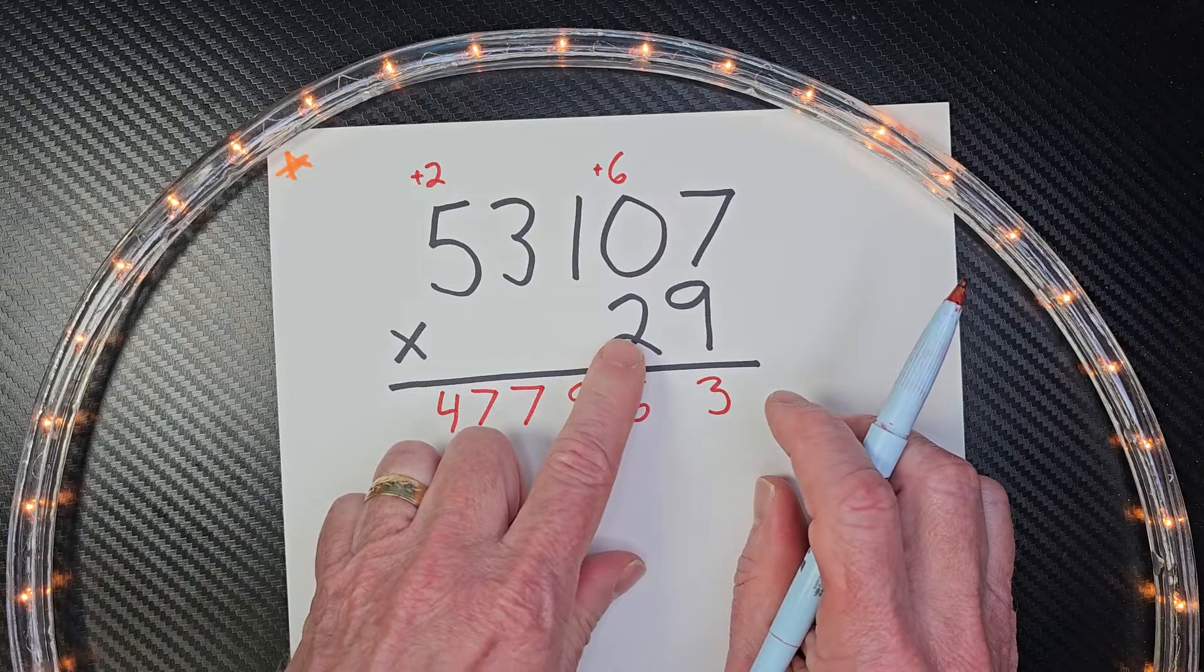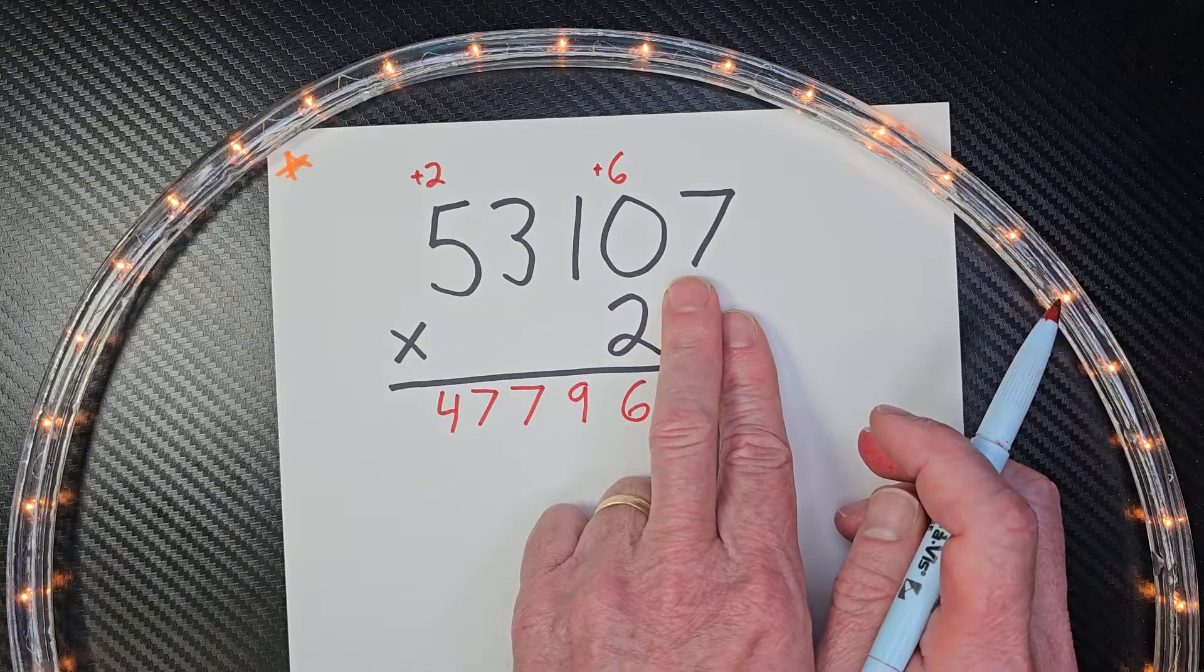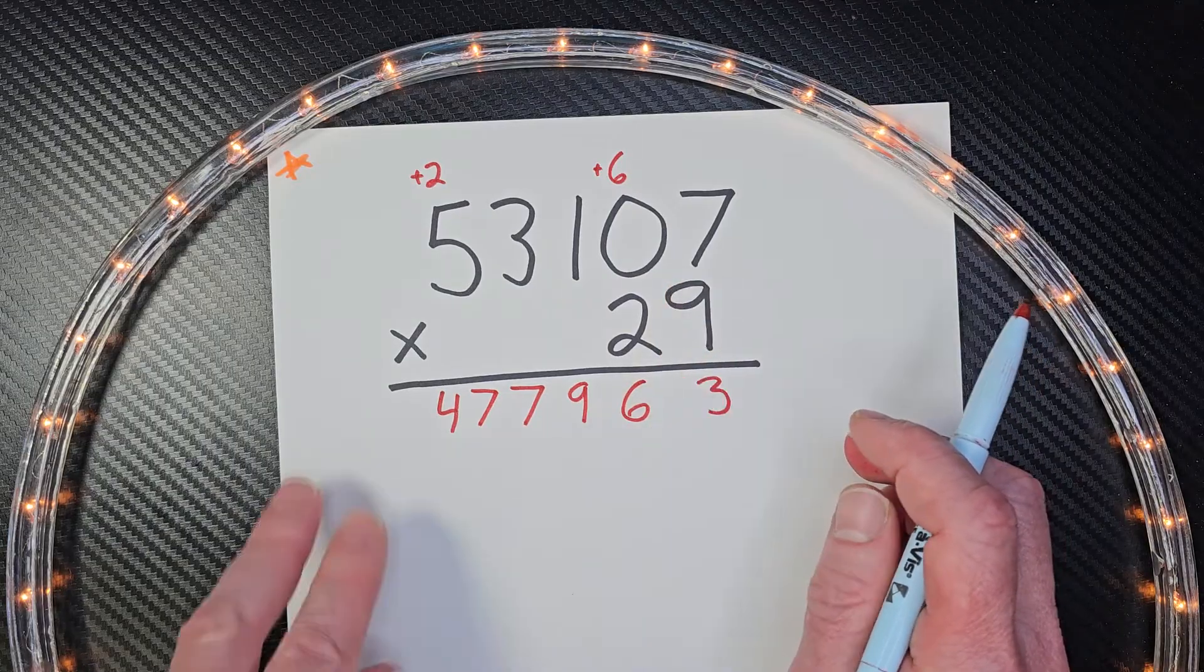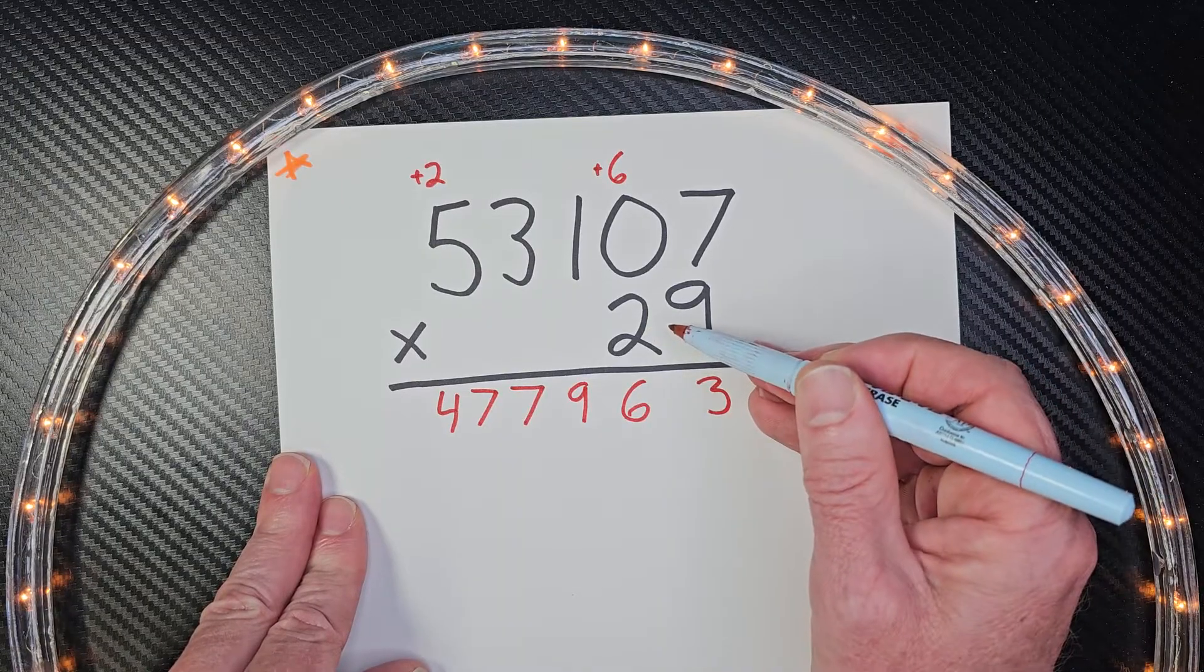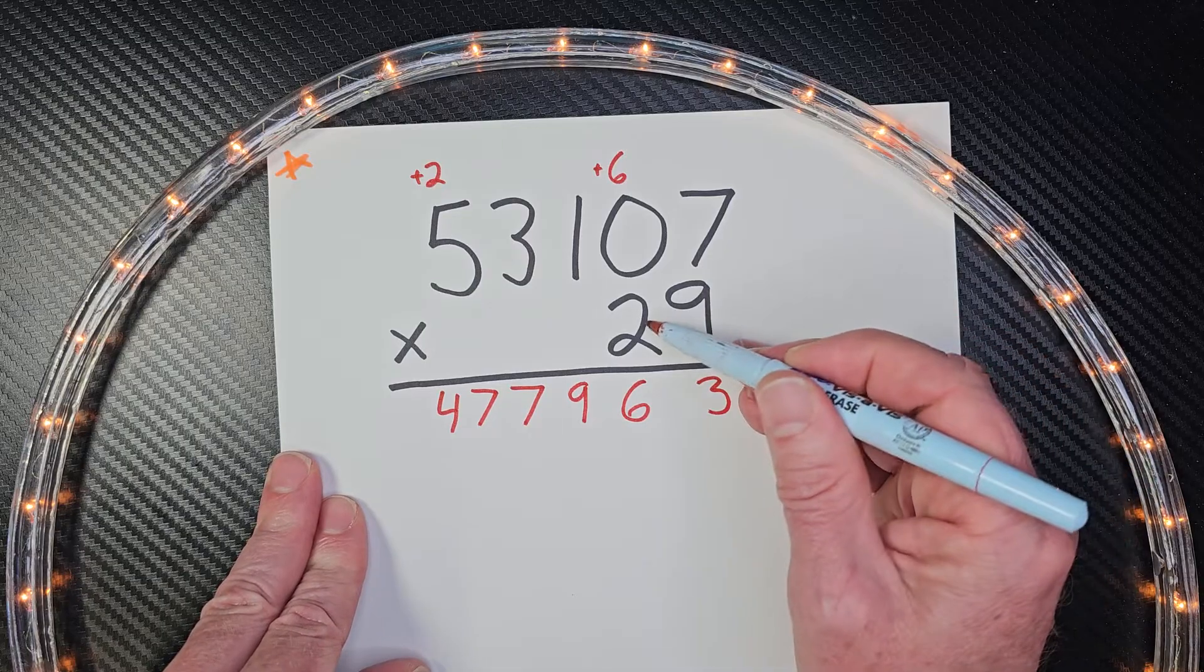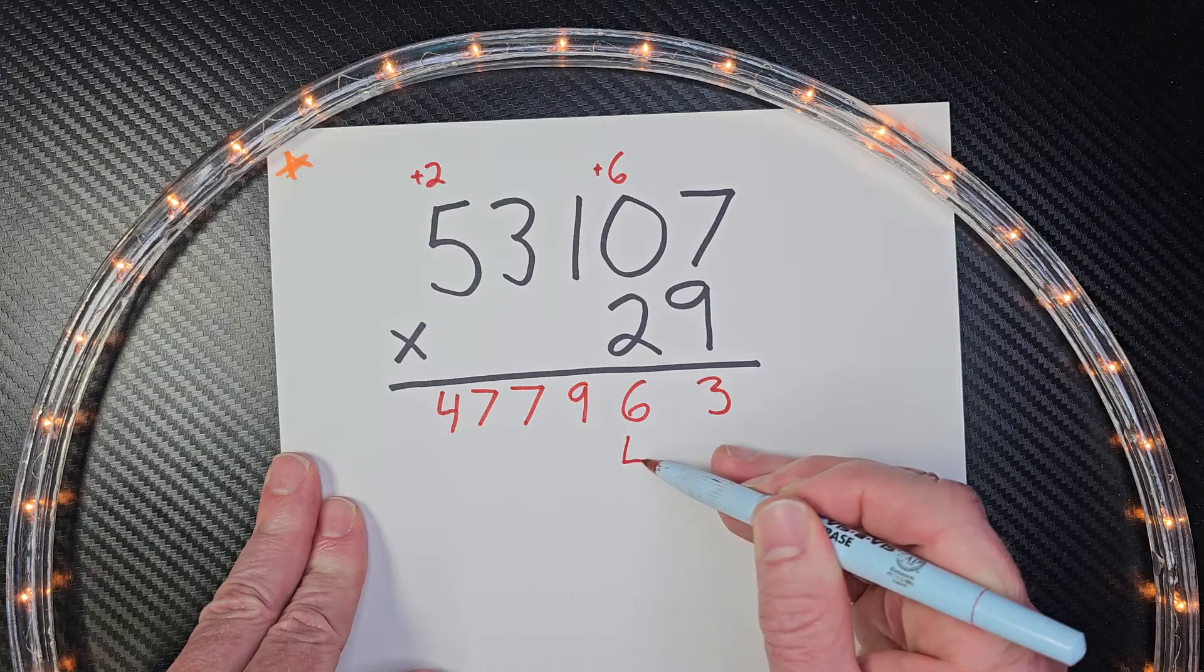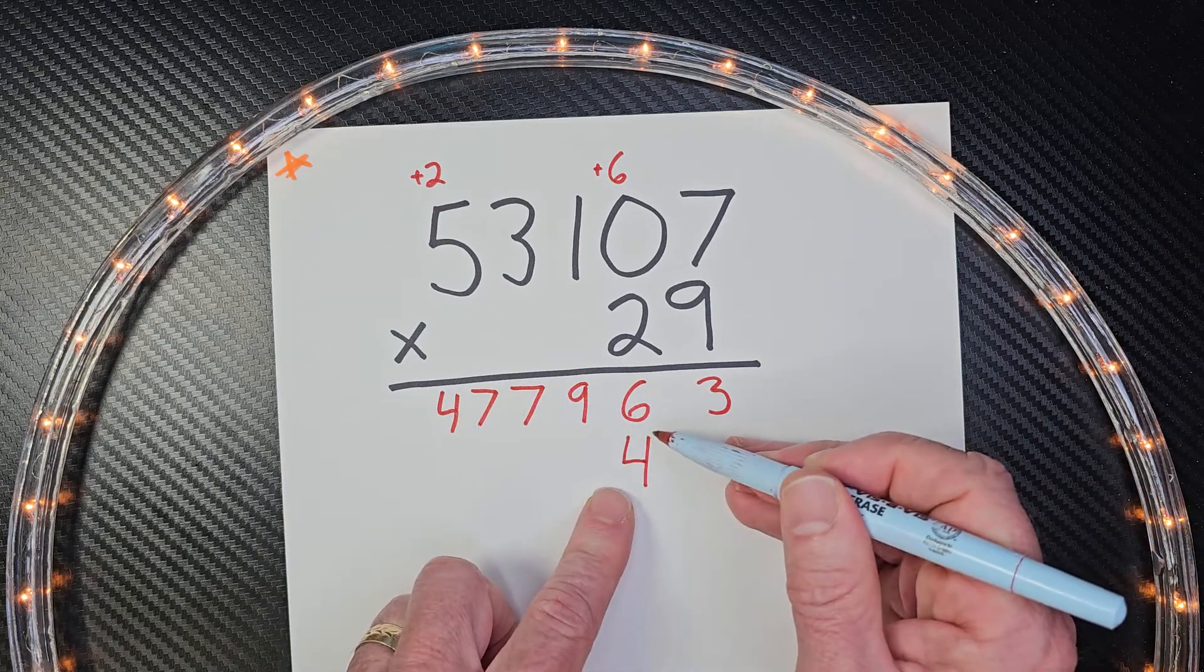Our next step is we're going to be multiplying by this two right here, so you can cover that nine up if you want to with a piece of paper, or you know, you put a cookie right there if you wanted to. When we're multiplying, it's very important that we line our numbers up correctly and neatly. So let's begin: two times seven is fourteen.